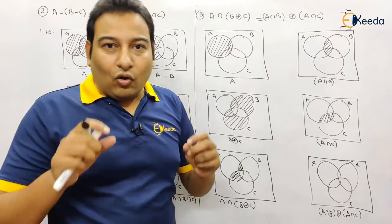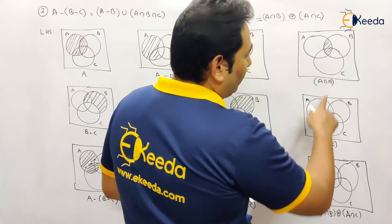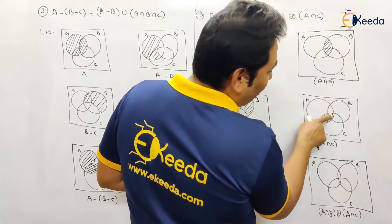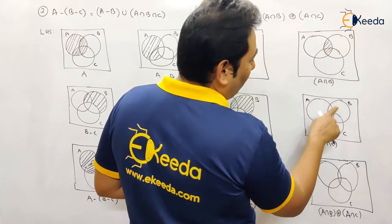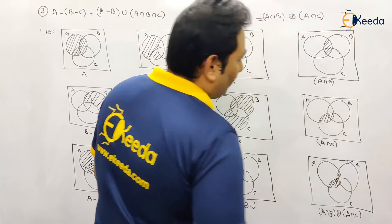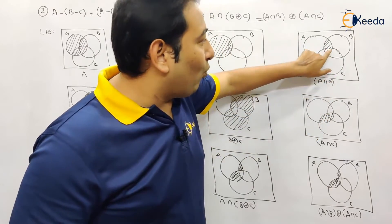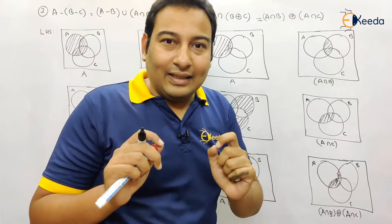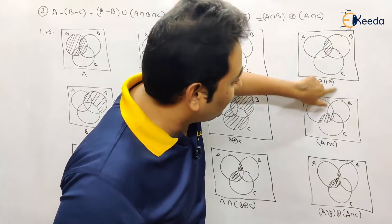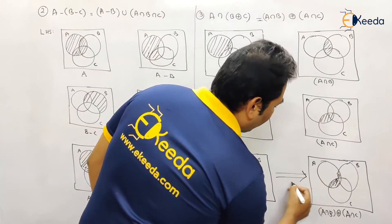XOR means the common part we leave it and the remaining part we shade. So what is the common part between these two that I am going to leave? This section is common — we are not going to consider it. Whatever is left — this one and this one — between these two only. Whatever is common between these two selected regions, leave that part. Whatever is uncommon, shade that region. So this is your common part we leave, and this is your uncommon part we shade. Now if you check, these two are equivalent. That's it.